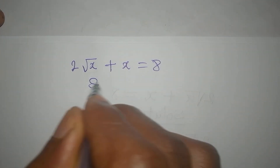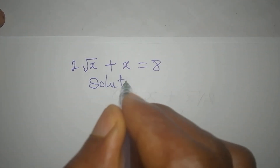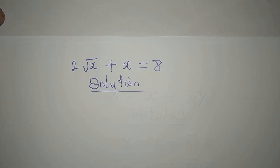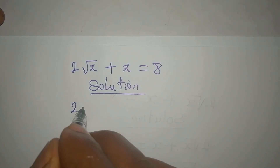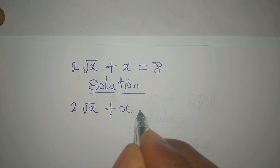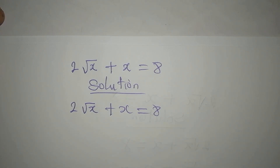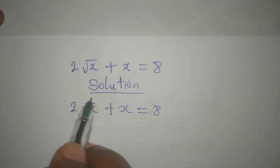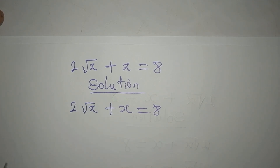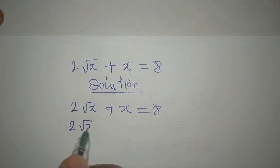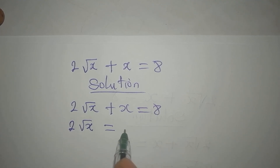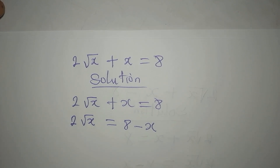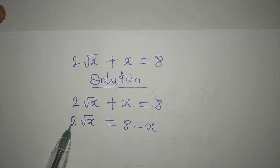Let's find the solution to this equation: 2√x + x = 8. The first thing to do is to move x to the other side. Our target is to remove the square root, so we get 2√x = 8 - x.